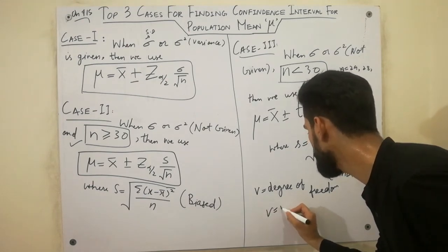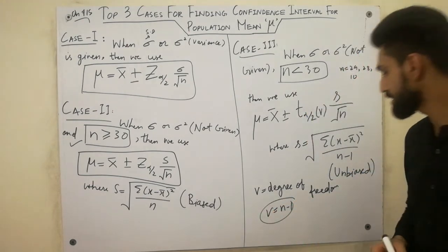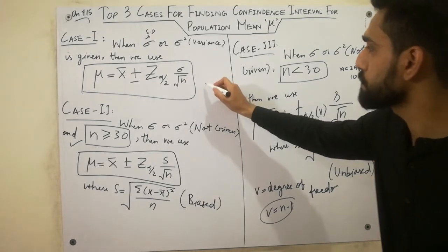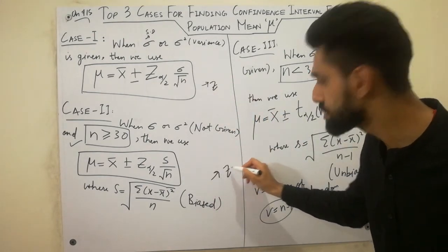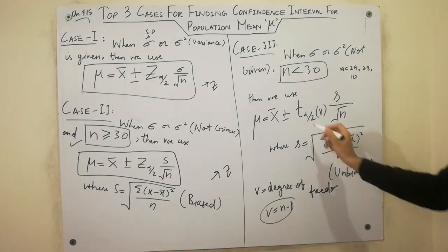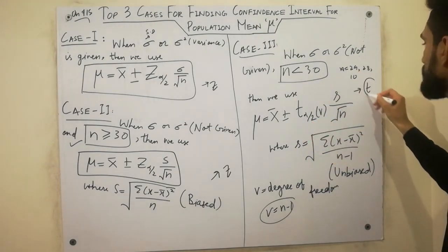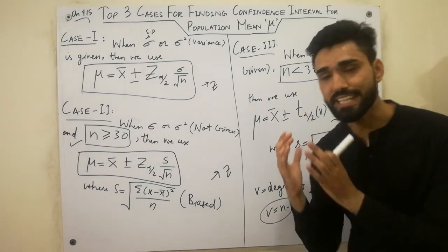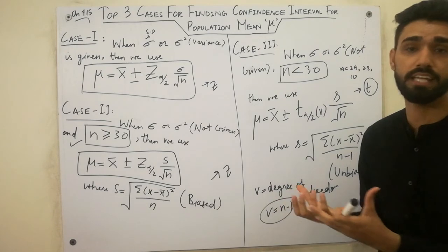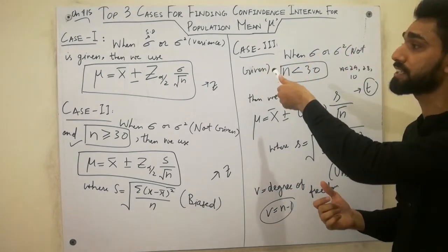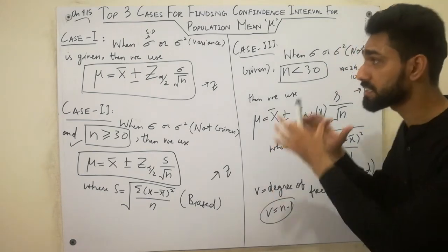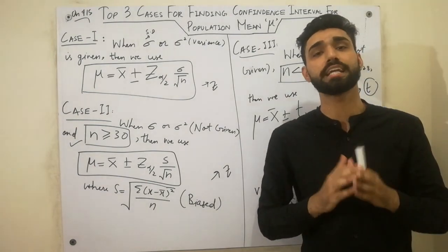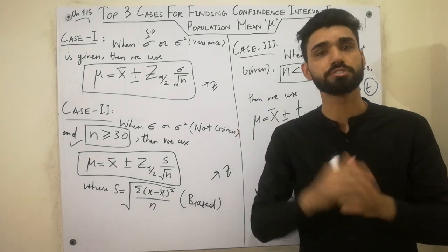The degree of freedom v equals n minus 1. These are the three cases for finding the confidence interval for population mean. If you like this video, please subscribe to my YouTube channel and press the bell icon button to get notifications of new videos. Goodbye.